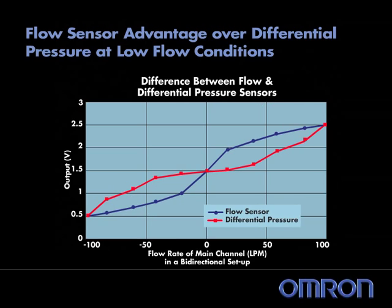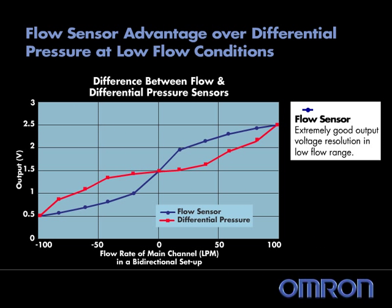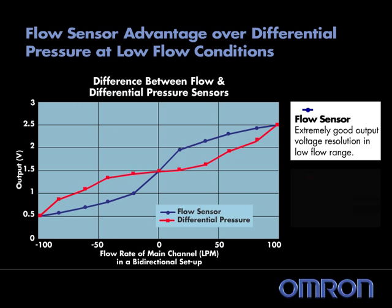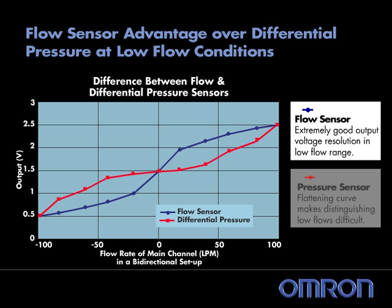This output curve is an example of a bi-directional bypass setup with a plus or minus 100 LPM flow rate through the main flow path. OMRON mass flow sensors provide excellent low-flow resolution over differential pressure sensors due to the shape of the curve as flows approach zero. Notice how the differential pressure curve flattens in the center near zero LPM.